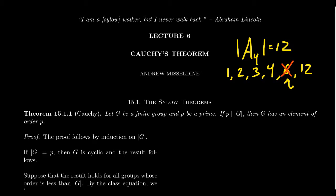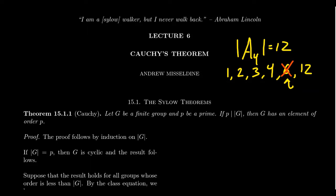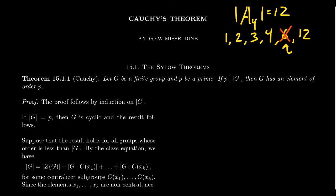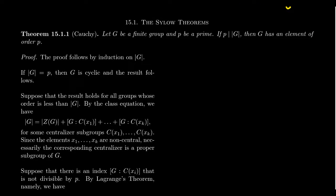Cauchy's theorem is an extremely useful theorem. It says that if G is a finite group and P is a prime such that P divides the order of G, then there is an element of G whose order is P. So every prime divisor of the order of the group guarantees an element of that prime order. The proof of Cauchy's theorem follows by induction on the order of G.